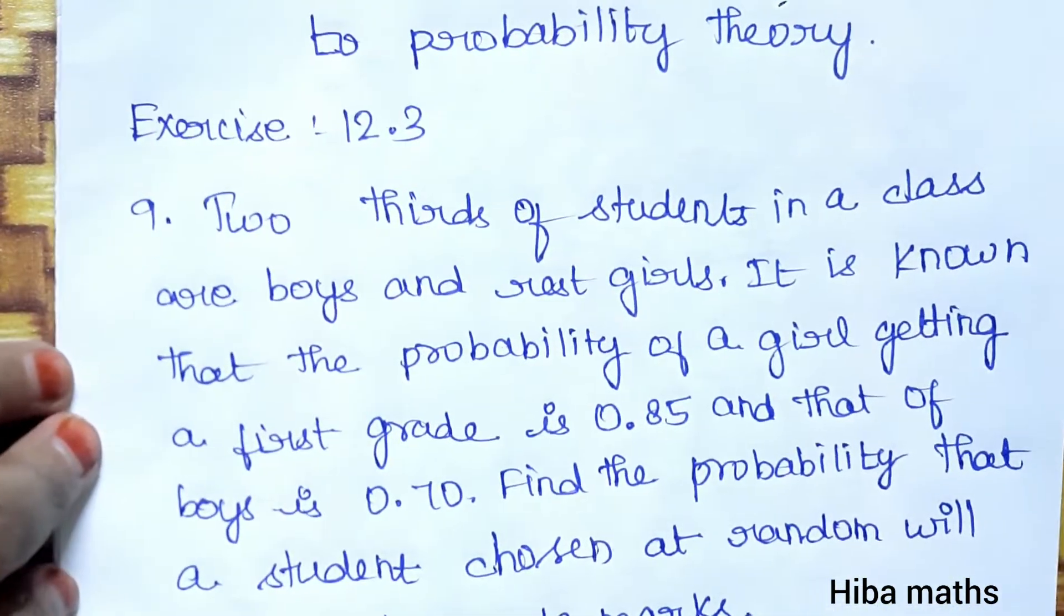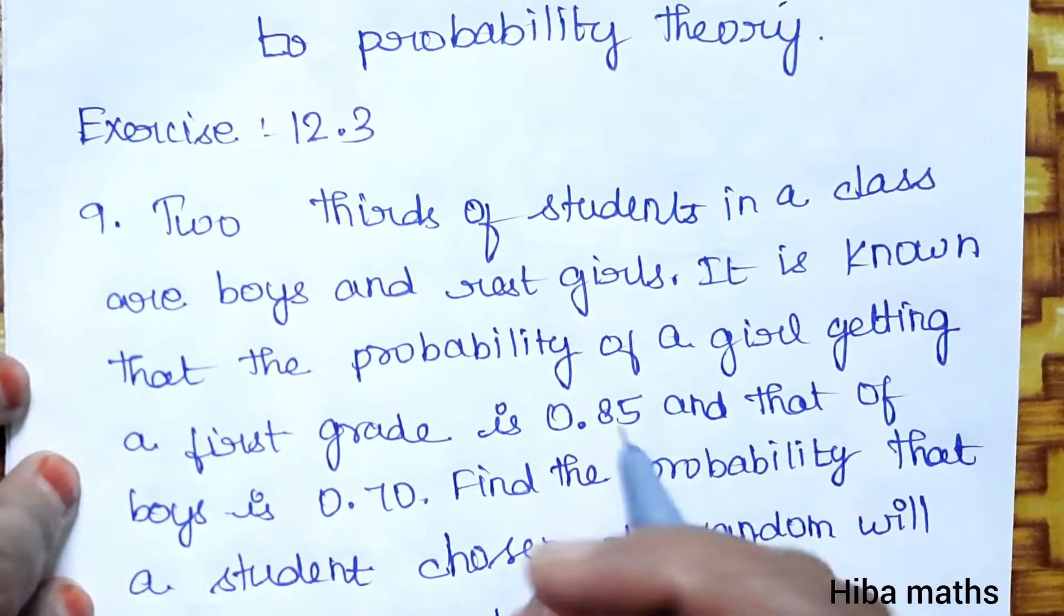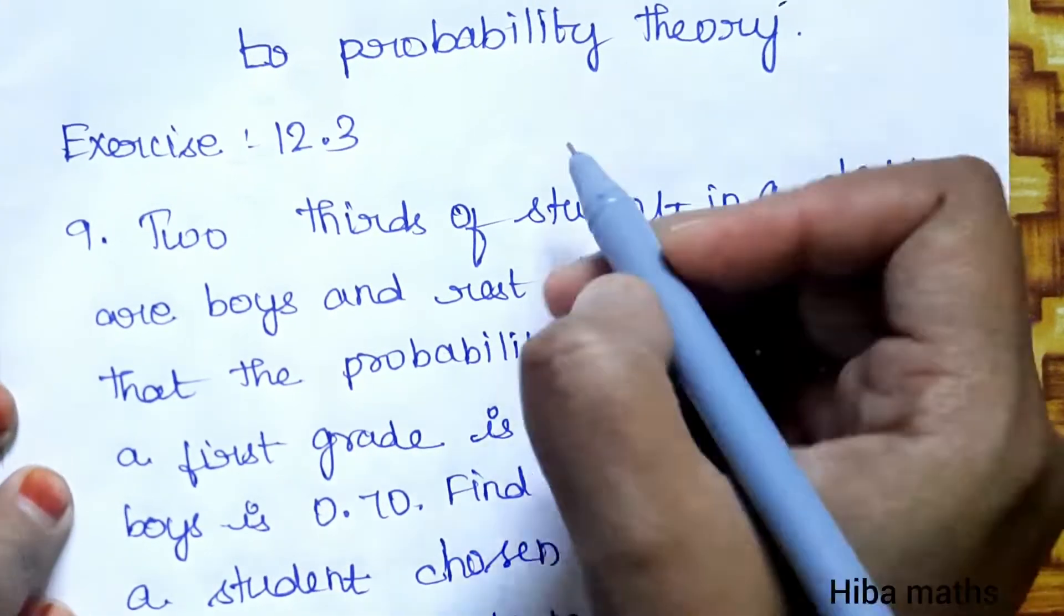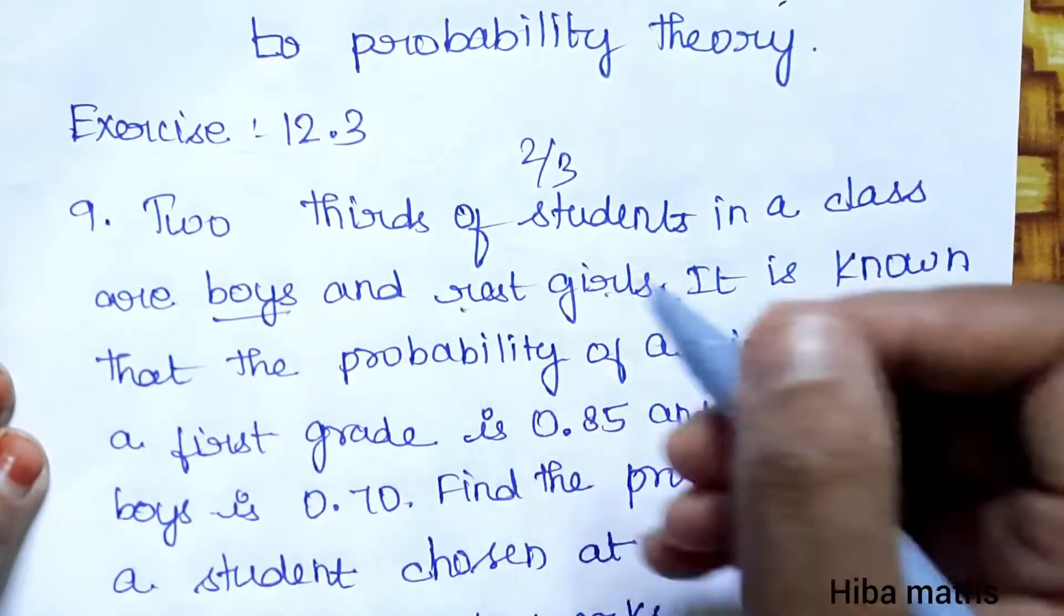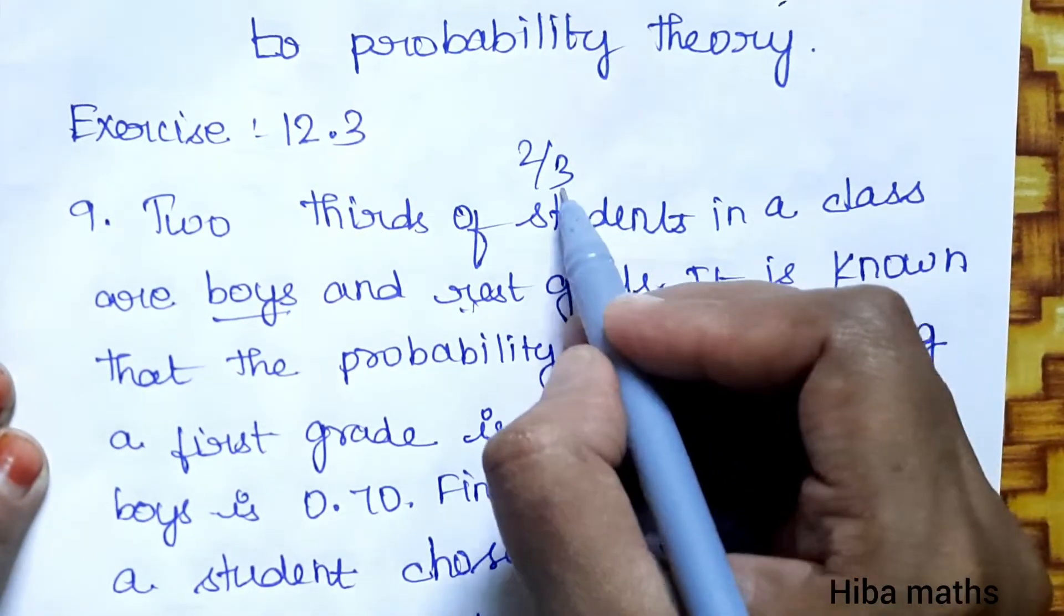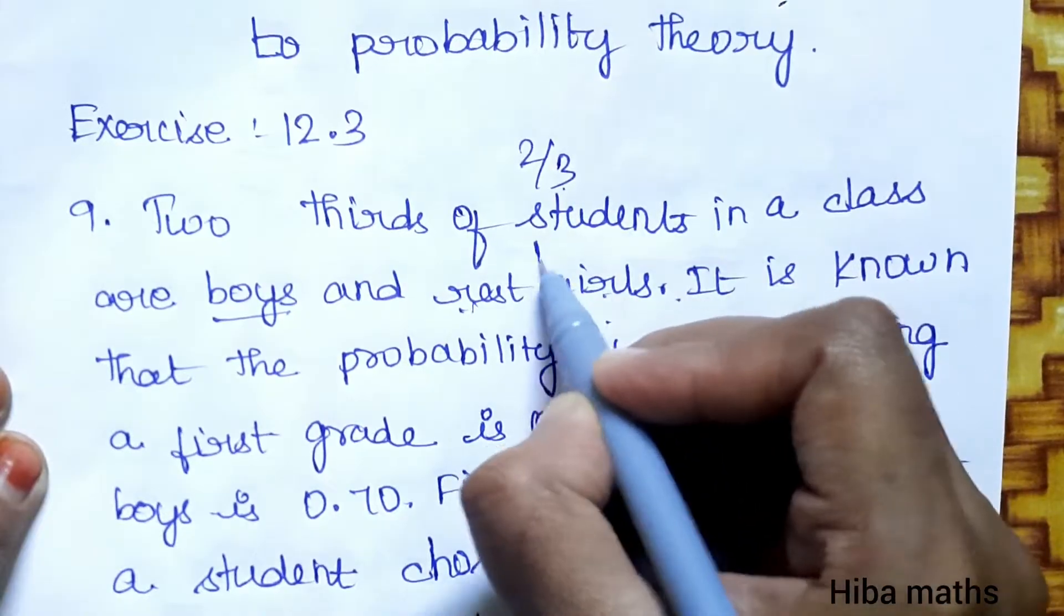The problem states: Two-thirds of students in a class are boys and rest are girls. So if there are 3 parts total, 2 parts are boys and 1 part is girls.